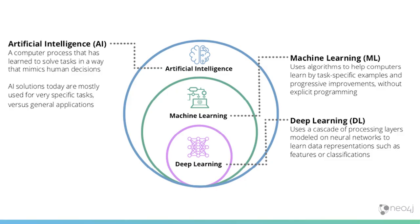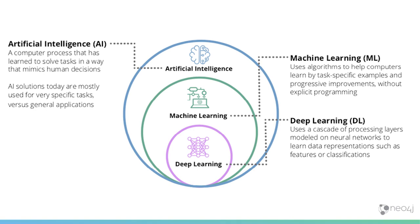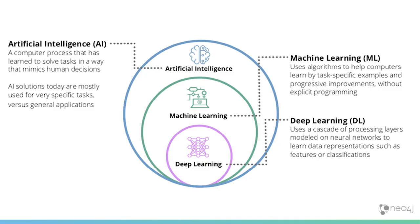I like to level-set on vocabulary. When I talk about artificial intelligence, I mean a computer process that has learned to solve tasks in a way that mimics human decisions — anything from a heuristic to deep learning. Machine learning is a subset of AI: an algorithm or model you can train to solve a specific task, give new data, and it makes predictions. Within machine learning, deep learning is a specific class of models using neural networks with multiple hidden layers to make predictions using gradient descent.